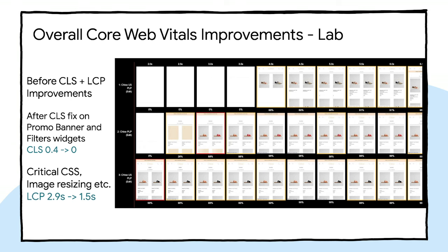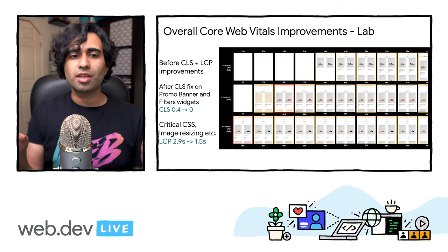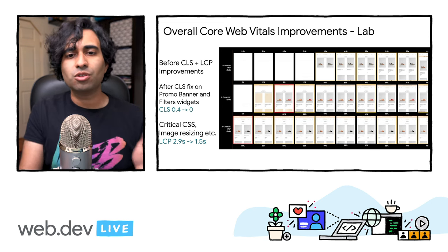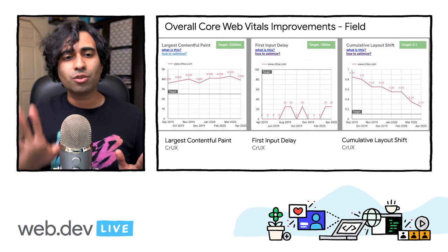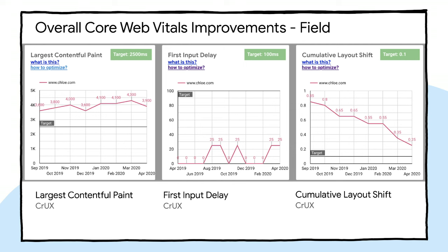Here's Chloe's overall web vitals in the lab. Thanks to their investments in performance and user experience, they reduced their Cumulative Layout Shift down to zero and their LCP by almost half. All of this work is the culmination of a number of smaller optimizations that, when added up, make a significant impact to the end user experience. Looking at Chrome User Experience Report field data for Chloe, Core Web Vitals metrics for LCP and CLS are trending in the right direction — CLS went from 0.85 down to zero in the latest dataset.